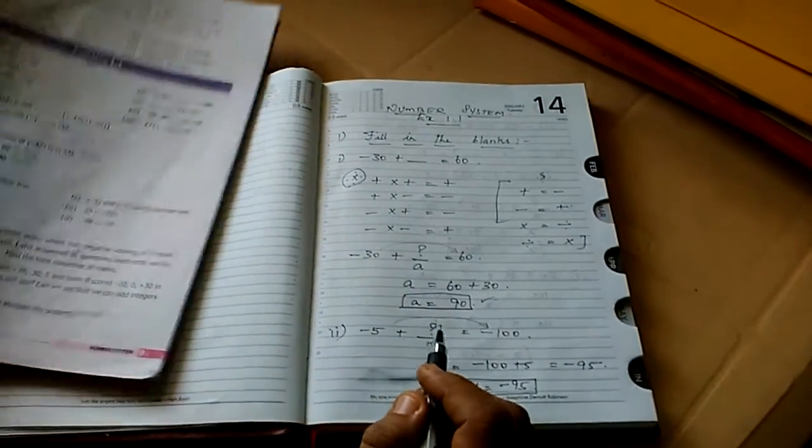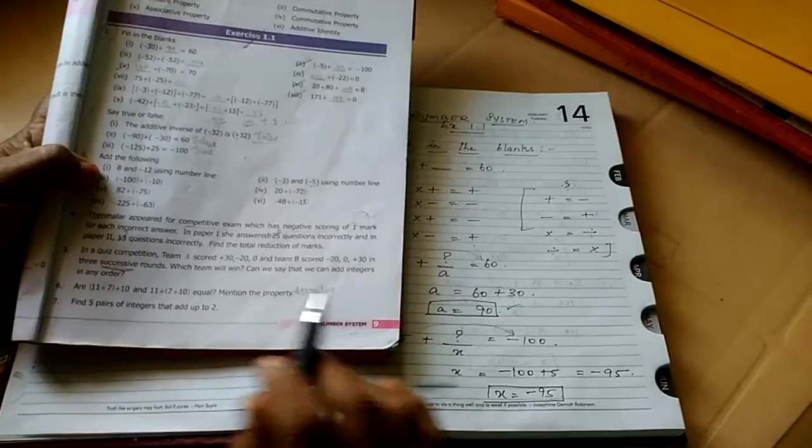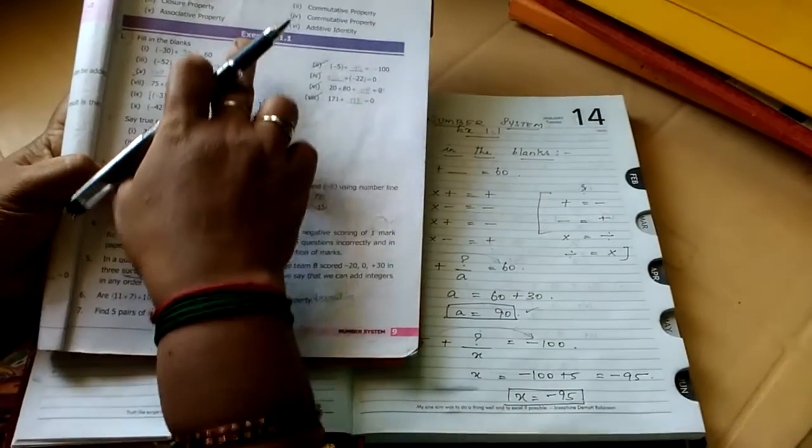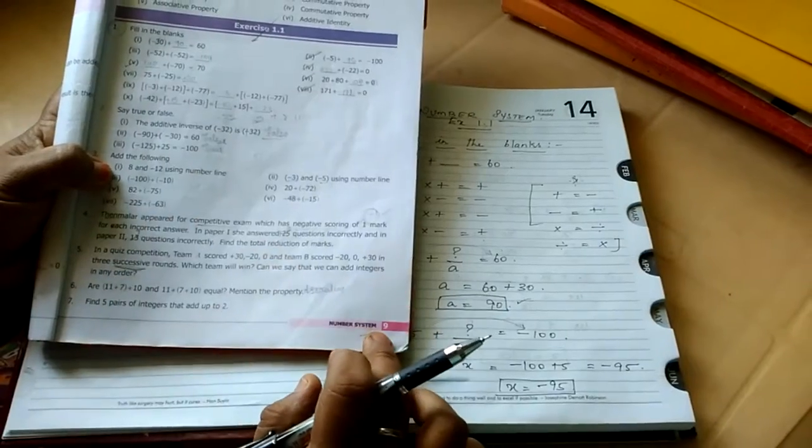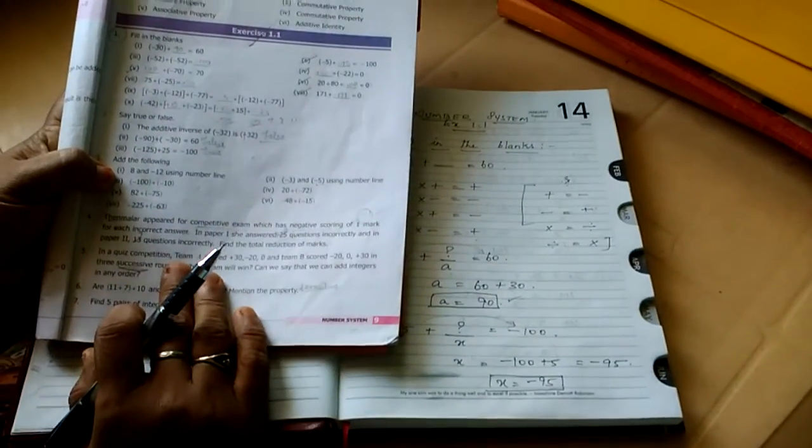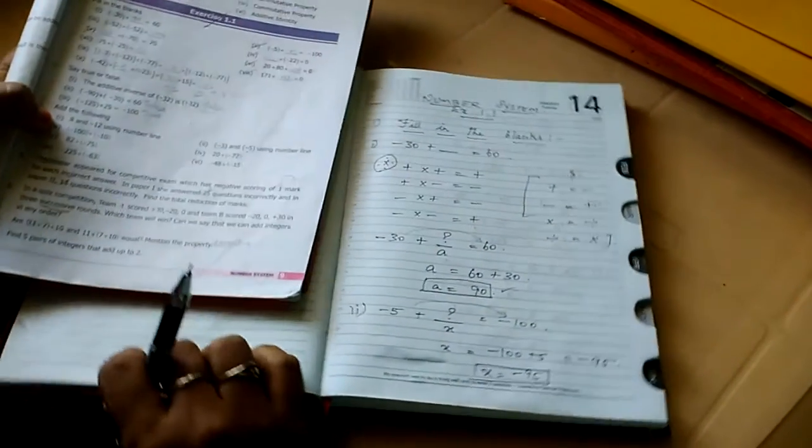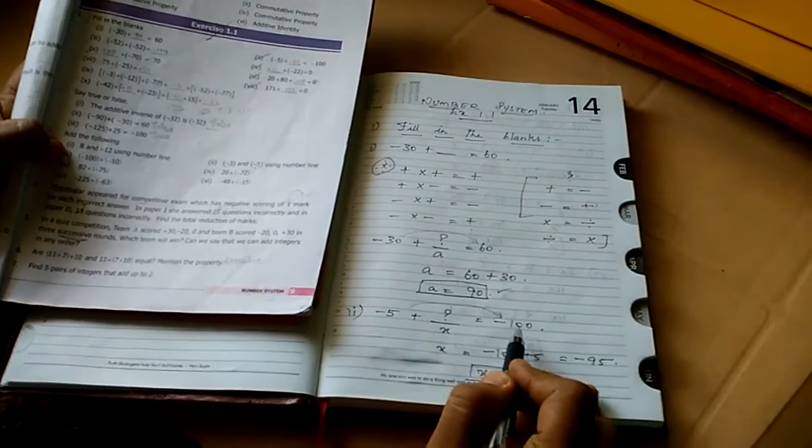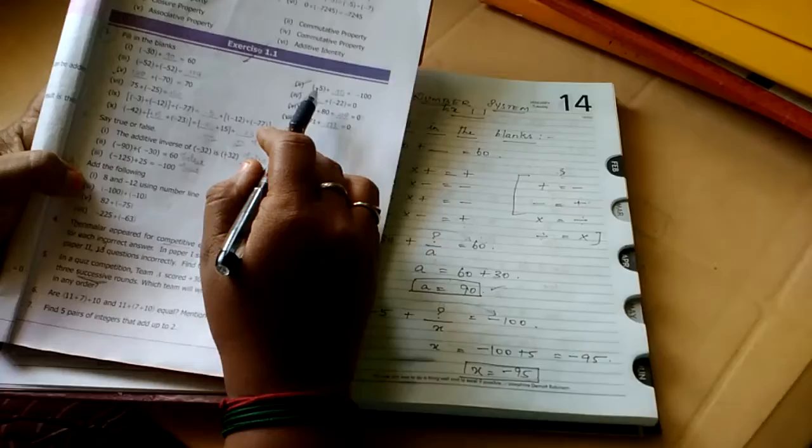So the second question, say in your reader page number 9 children, it is for Metric state board children, 7th standard class. It is Exercise Number 1.1, page number 9. This is for your reference. You can take your reader also. So the second question, minus 5 plus a dash equal to minus 100. You can see your reader also.